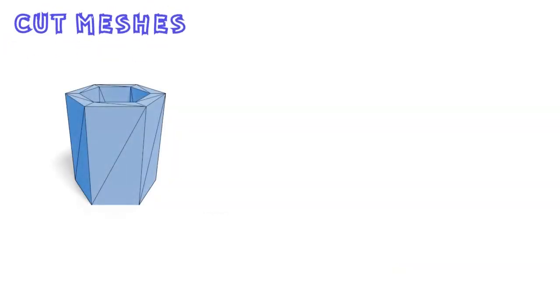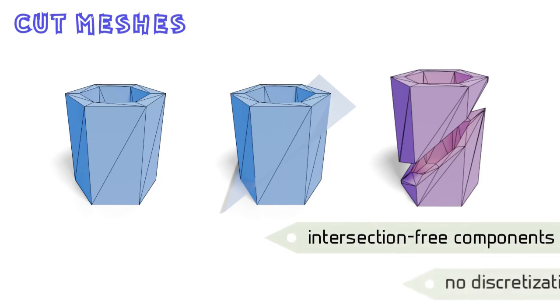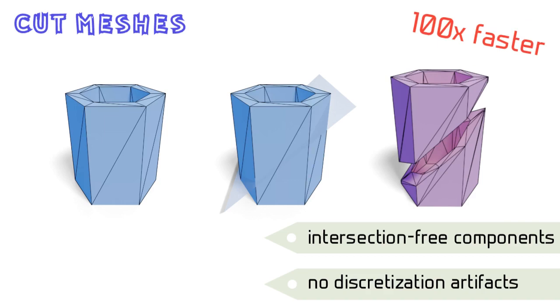Instead, we utilize triangle meshes to represent solid components during the decomposition process and directly cut the manifold meshes through 3D planes. In this way, we ensure convex hulls of the decomposed components are intersection-free and avoid over-decomposing convex shapes. We provide a lightweight mesh cutting implementation to accelerate the decomposition, which is about 100 times faster than off-the-shelf libraries.